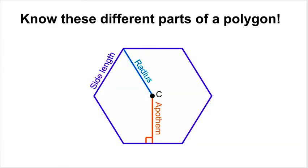Let's talk about some important measurements given in a polygon. The apothem is drawn from the center to the middle of a side. The radius is drawn from the center to a vertex of the polygon. You might also just be given a side length. Whatever is given, the wedge piece triangle is made up of one of those three pieces — the apothem as the height, half the side length as the base, or the radius as the hypotenuse.